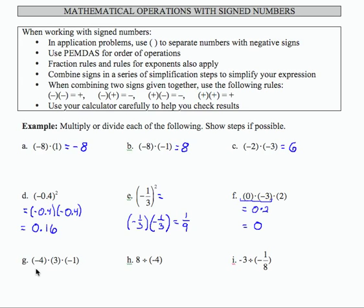Part G, again I have three numbers, so let's start with the first two. Negative 4 times 3 is negative 12, and that result is going to be multiplied times negative 1. A negative times a negative is a positive, so my result is going to be a positive 12.